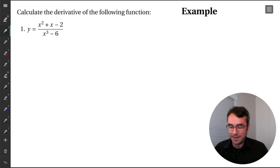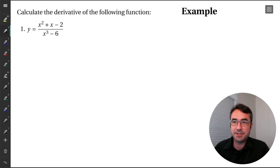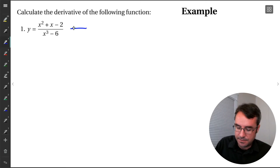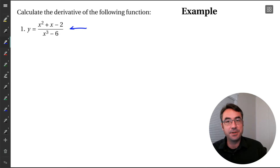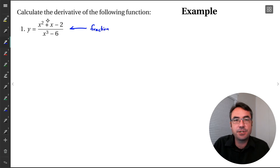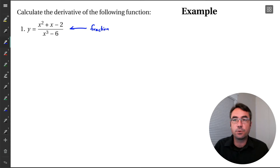Let's try one out. We're going to calculate the derivative of the function y equal to x squared plus x minus 2, over x cubed minus 6. The first thing we need to do is identify what's the main operation going on here. With division, we normally have these big fractions. So we have a fraction — there's a top function, x squared plus x minus 2, and we're dividing by a bottom function, x cubed minus 6. So there is division here, which means quotient rule is most likely necessary.